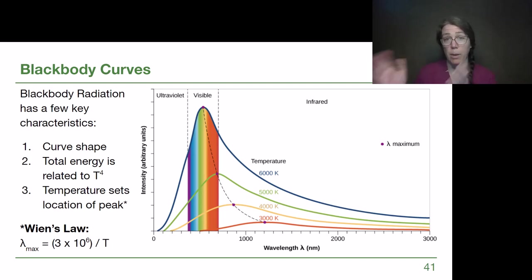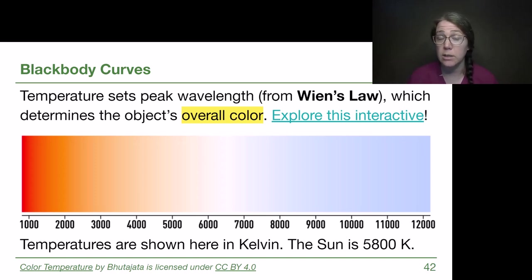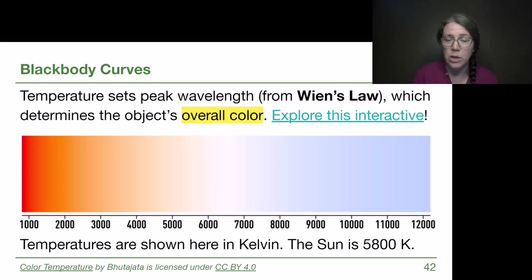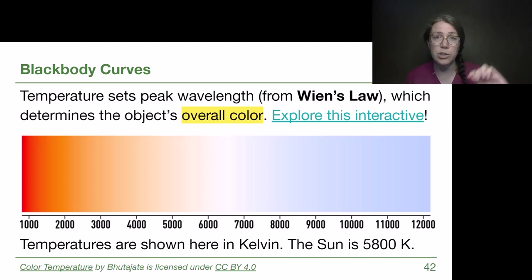The peak wavelength equals 3 million divided by the temperature. This slide shows all of the different colors that stars can actually appear. Because of the shape of that curve, if we peak in the middle like the sun does, we get a washed-out kind of color. The coldest stars will look reddish-orange, the hottest will look significantly bluer. Orion is a helpful constellation to look for, with the reddish star Betelgeuse and the bluish star Rigel on either side of the belt.